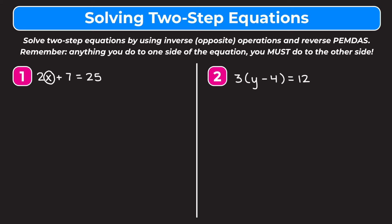To get rid of a plus 7 we have to do the inverse operation, which is minus. So we're going to subtract 7 from the left side of our equation, and anything you do to one side of an equation you have to do to the other. So we subtract 7 from the right side as well. On the left we're left with 2x, and on the right 25 minus 7 gives us 18.